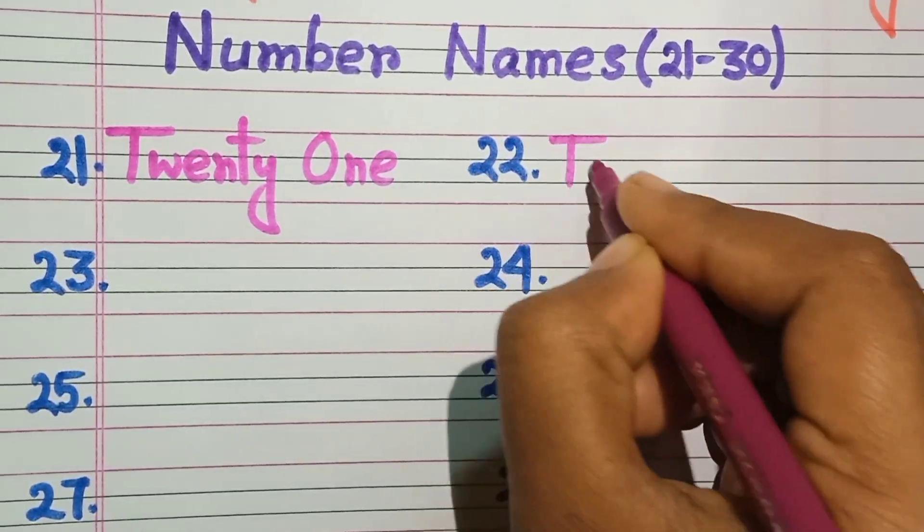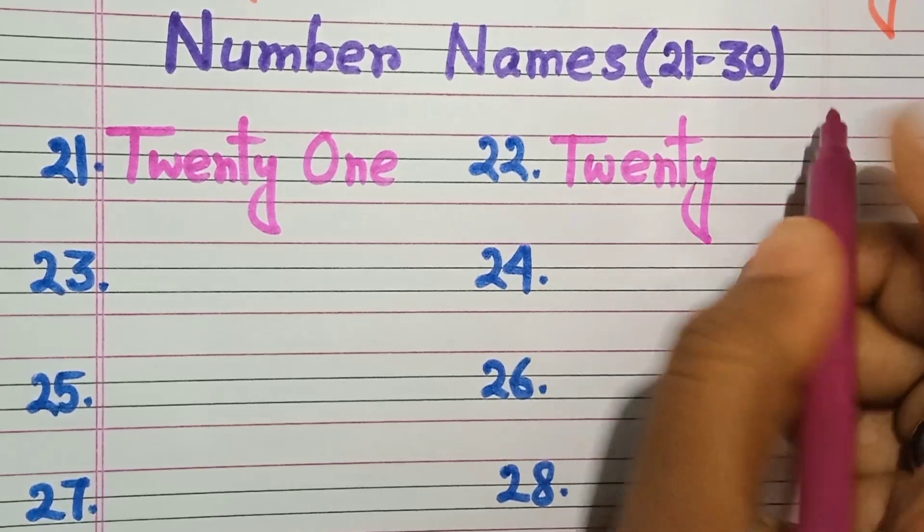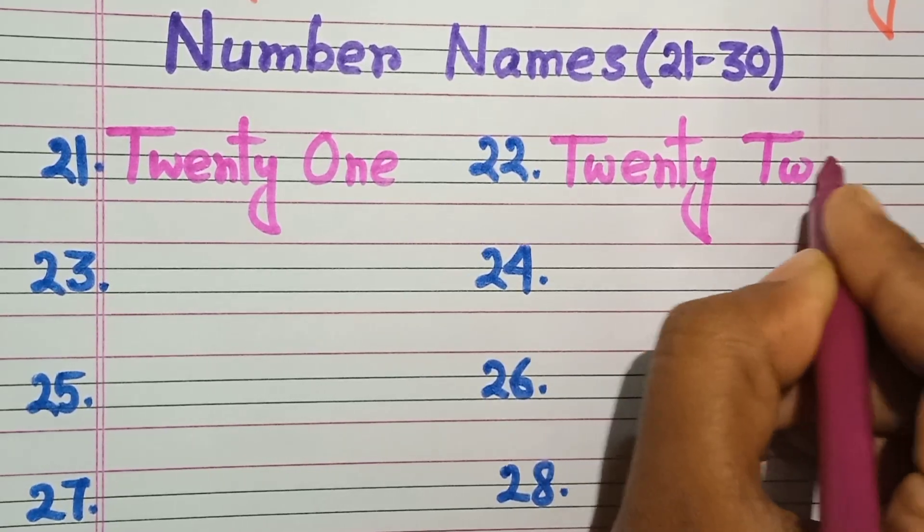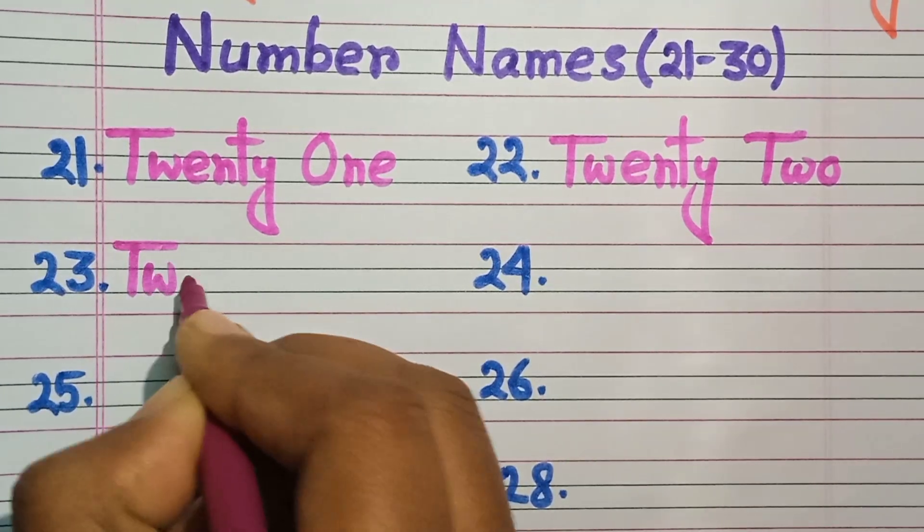22. Twenty-two. T-W-E-N-T-Y, twenty. Two, T-W-O, 22.